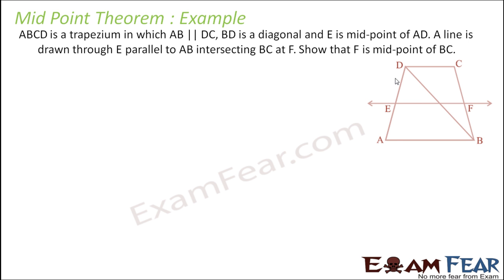Next, ABCD is a trapezium with AB parallel to CD. D is the diagonal, E is the midpoint of AD, and we have to prove that F is the midpoint of BC. Since EO is parallel to AB and E is the midpoint of AD in this triangle, O will be the midpoint of DB. Then since DC is parallel to OF and O is the midpoint of DB, F becomes the midpoint of BC.